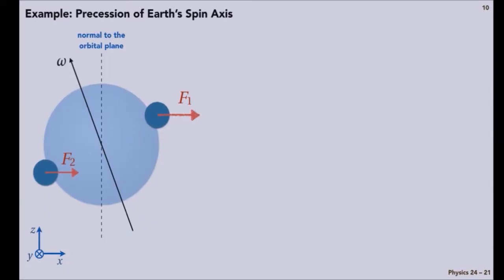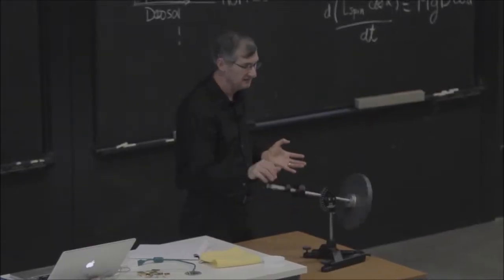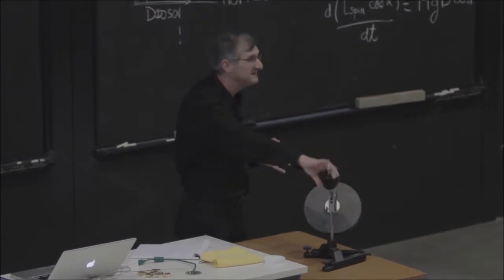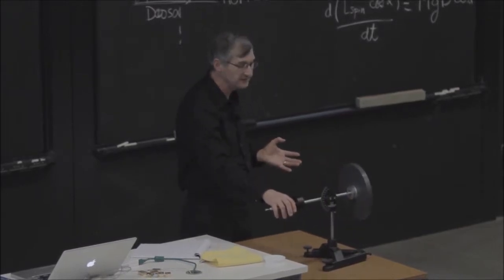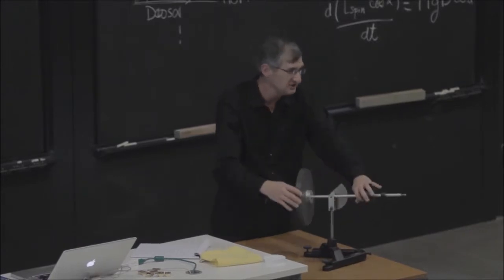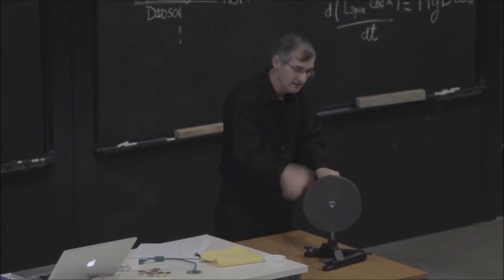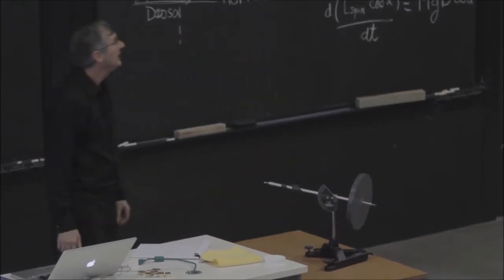So we have understood some of the properties of a gyroscope by looking at the vector character of angular momentum and torque. If the gyroscope is not spinning, it falls. If it is spinning, it can't fall, because falling would imply a sudden change in its angular momentum. And the only thing that changes angular momentum is torque. So it can't just fall, and it has to therefore precess around.